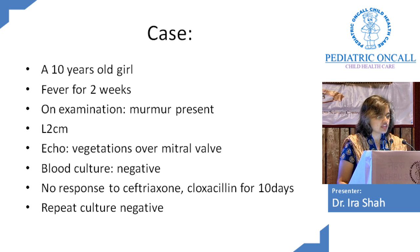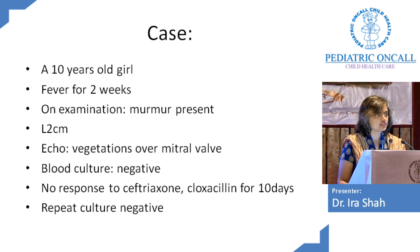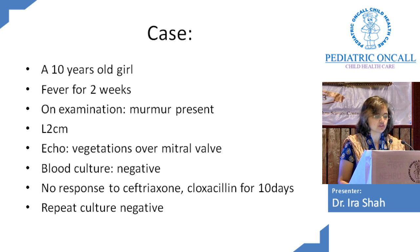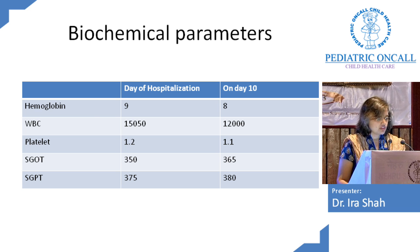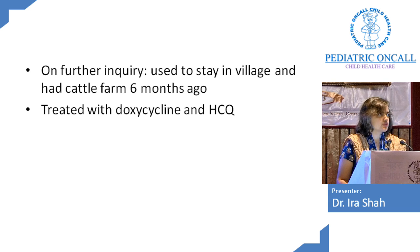Here is a ten-year-old girl who came with fever for two weeks. On examination she had a murmur and hepatomegaly. An echo showed vegetation of the mitral valve — infective endocarditis. Blood culture was negative. She was treated with ceftriaxone and cloxacillin for ten days; repeat blood culture showed no growth, but fever continued to persist. Biochemical parameters showed slightly elevated liver enzymes and elevated white cell count, so a PID consult was taken.